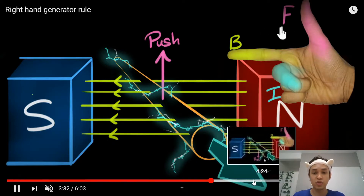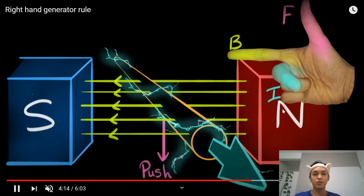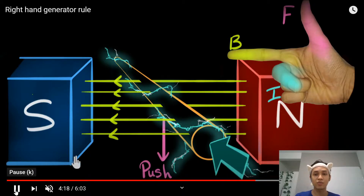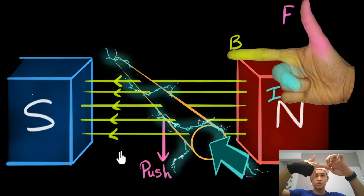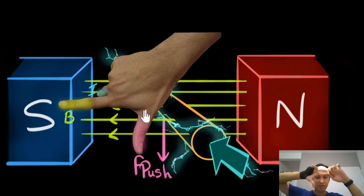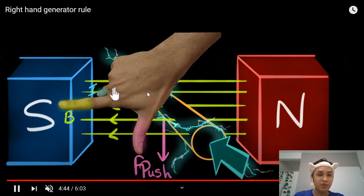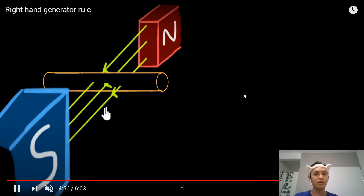If the force is going downwards: remember, lock your first finger in the direction of the magnetic field, then rotate the thumb downwards only — don't change the shape of your fingers. Once you lock it, just rotate the thumb to point downwards. In this case, your current is now going into the paper — the opposite direction compared to when the force was upward.